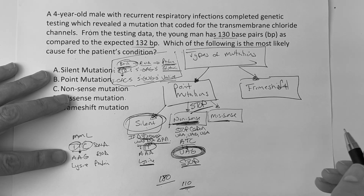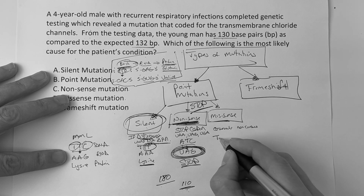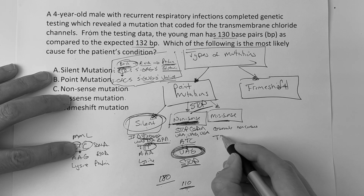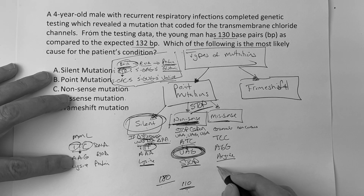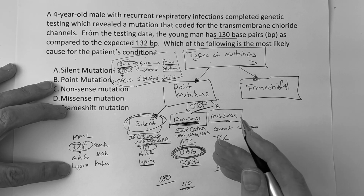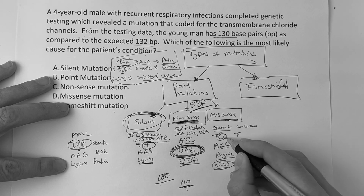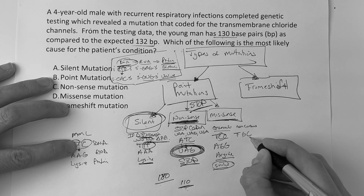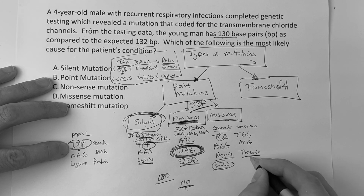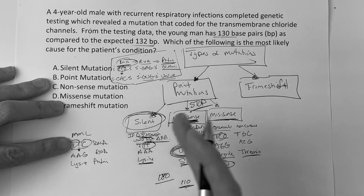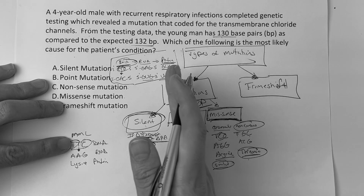The last point mutation type is missense. Missense can be broken down into conservative versus non-conservative. Conservative means the amino acid change is to something similar — for example, if a second T changes to a C giving AGG, that codes for arginine, which is somewhat similar to lysine. Non-conservative means the change results in a totally different amino acid — say TTC changes to TGC, giving something polar versus non-polar. Both fall under missense mutation.